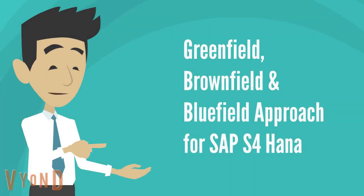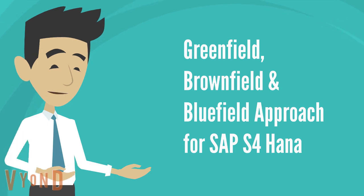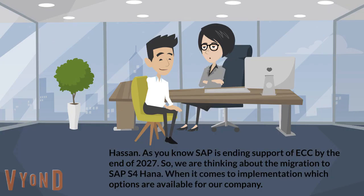Greenfield, Brownfield, and Bluefield approach for SAP S4 HANA. As you know, SAP is ending support of ECC by the end of 2027. So we are thinking about the migration to SAP S4 HANA. When it comes to implementation, which options are available for our company?